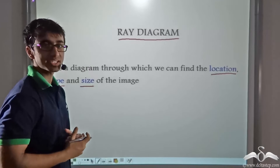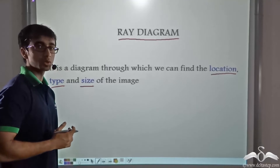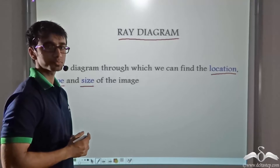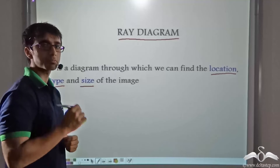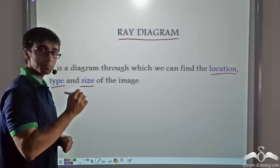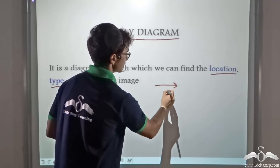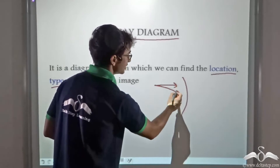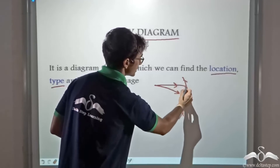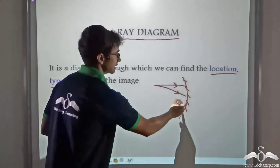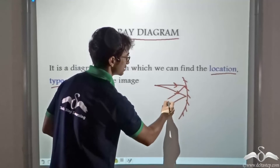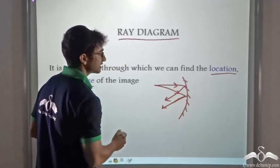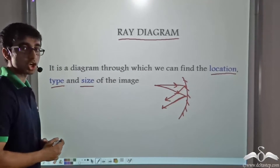So let us say that we have an object and a spherical mirror provided and we have to find out through a ray diagram the location, type and size of the image. To find the image of a particular point on the object, we consider incident rays travelling in the outward direction. These are incident on the surface of the mirror and after reflection they will travel in the opposite direction. So by tracing out the incident rays and the reflected rays after hitting the mirror, we can find out the location, type and size of the image.